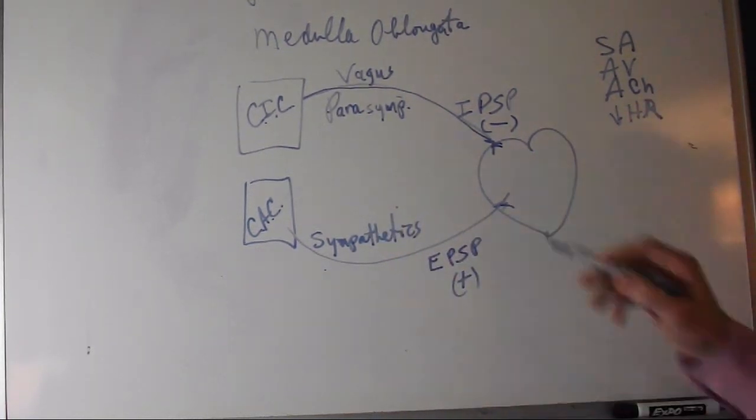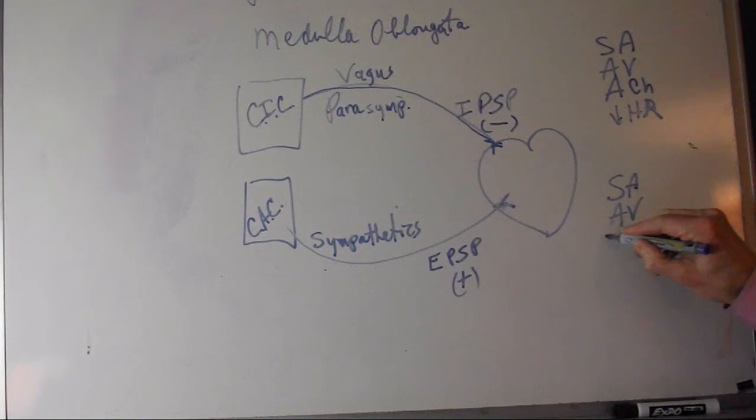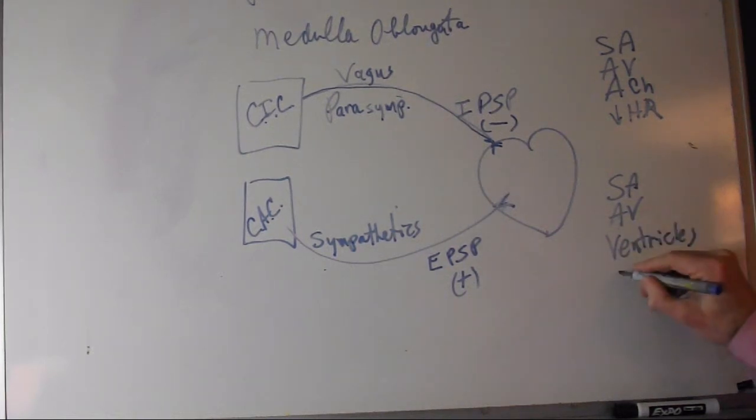The sympathetics from the cardiac acceleratory center have an excitatory effect on the heart. They innervate the SA node, the AV node, and the ventricles. These are associated with norepinephrine and increase heart rate.